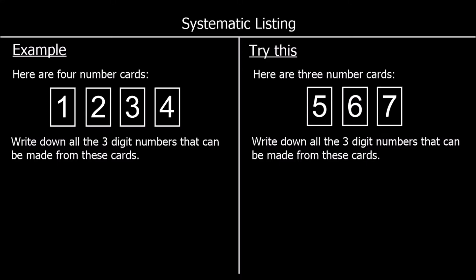Here's a different question. We've got four number cards — write down all the three-digit numbers that can be made from these cards. So again, let's do it in a nice ordered way. We could have one in the hundreds and two in the tens, then we could have three in the ones or four in the ones. So those are our two options for having one hundred and twenty something.